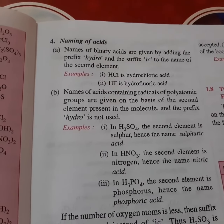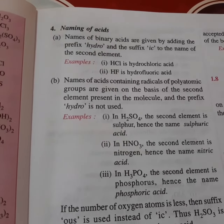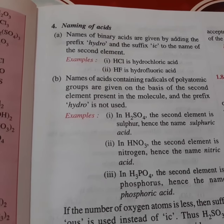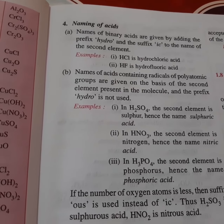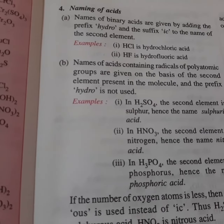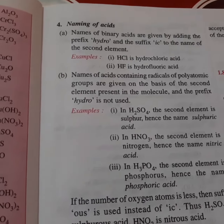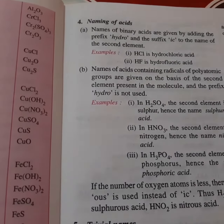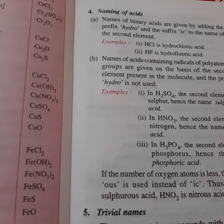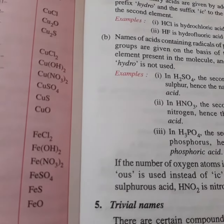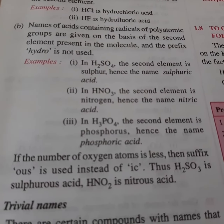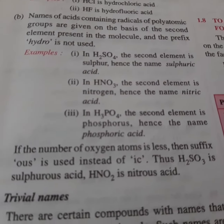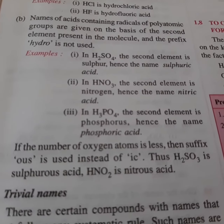The names of certain acids containing radicals of polyatomic groups are given on the basis of the second element present in the molecule, and here the prefix hydro- is not used. For example, sulfuric acid is H2SO4 — the name comes from sulfur, so it is sulfuric acid. For HNO3, nitrogen is the second non-metal, so we get nitric acid.